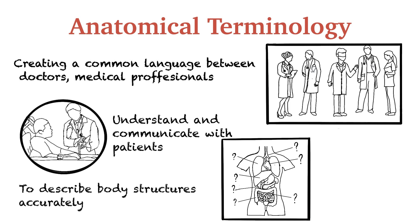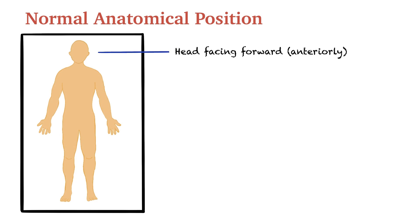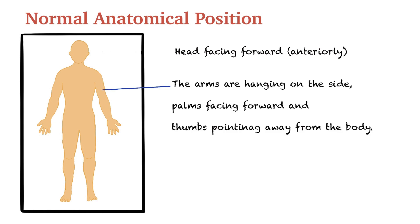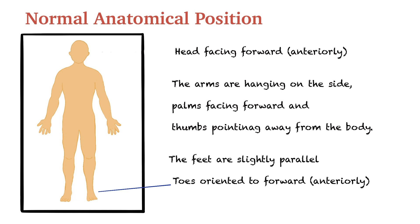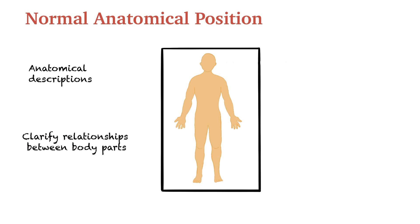These terms define relative structures clearly and specify the position of organs and parts relatively. Descriptive terms include positional and directional terms. All anatomical descriptions, such as extremities and their directions or types of movements, are described by the normal anatomical position. Normal anatomical position is standing upright, head facing forward — in Latin, anterior — so we can say facing anteriorly. The arms are facing forward or anteriorly, with thumbs pointing away from the body. The feet are slightly parallel and toes oriented anteriorly. This descriptive remark is used worldwide and allows you to clarify relationships between body parts even in different positions.